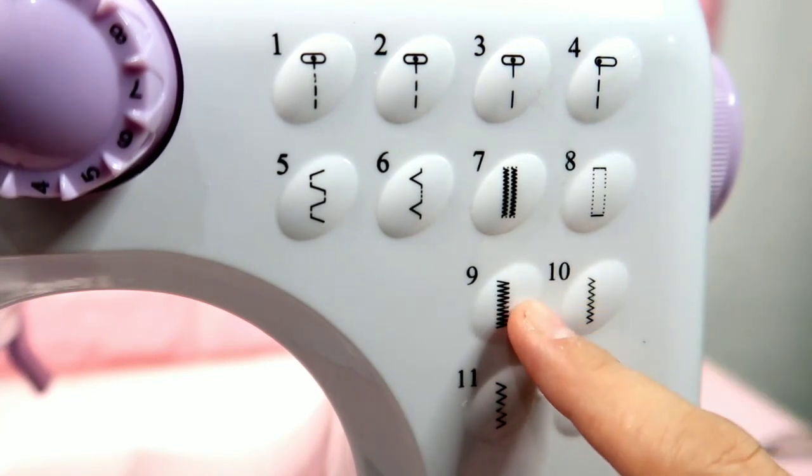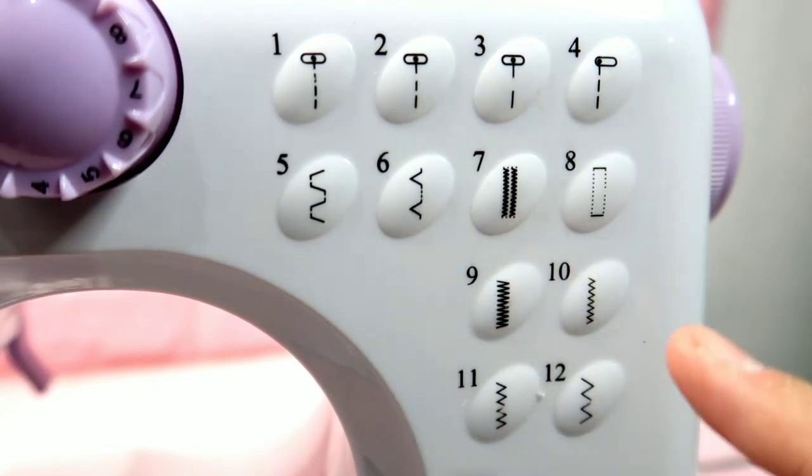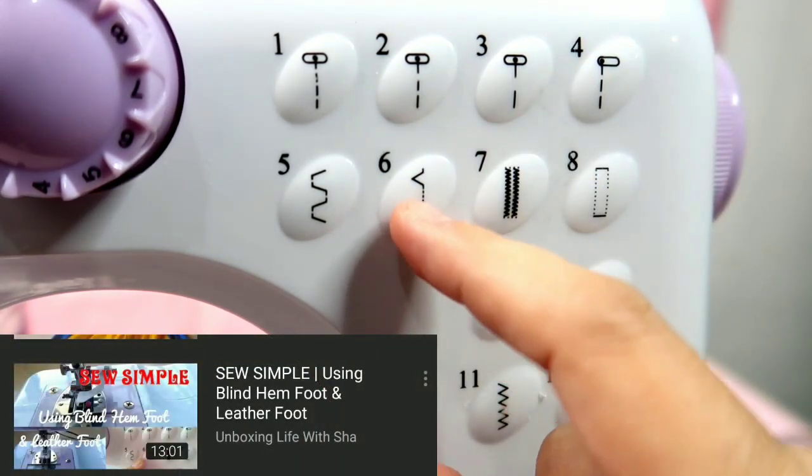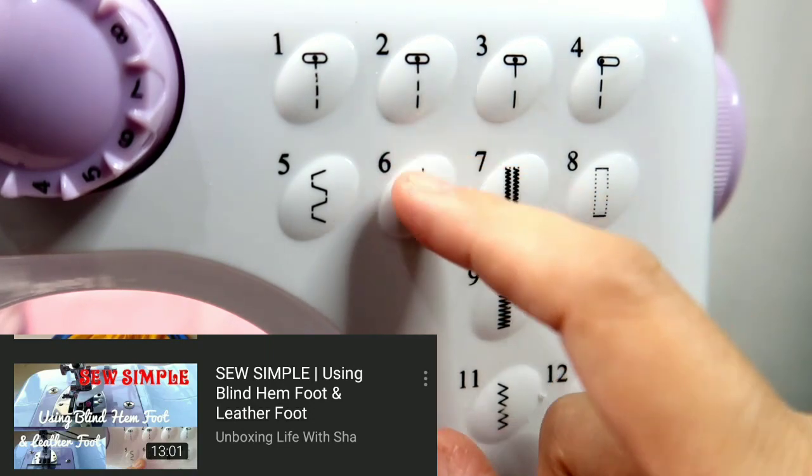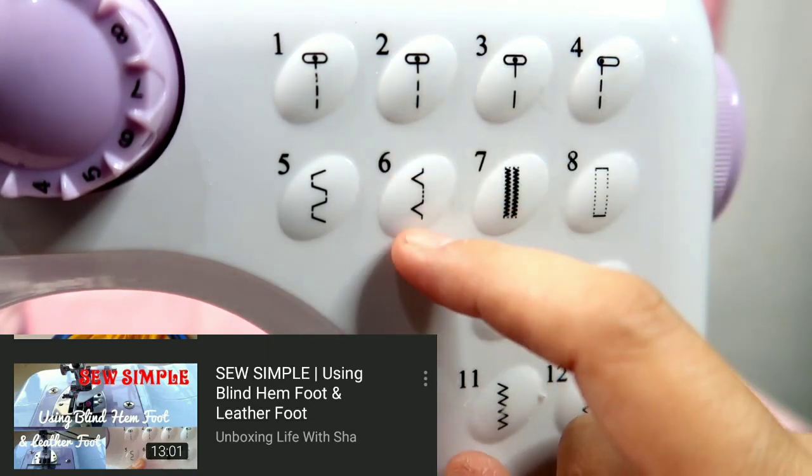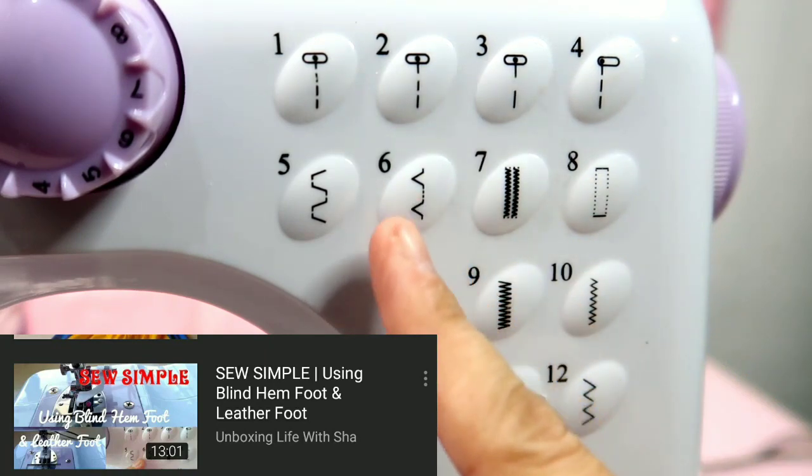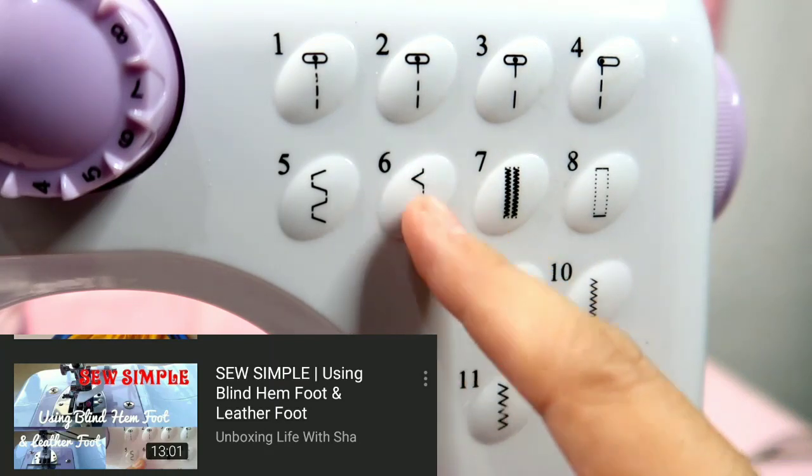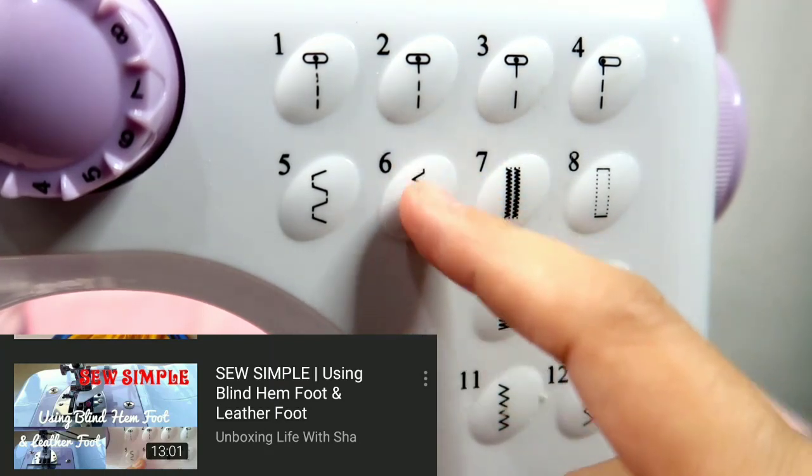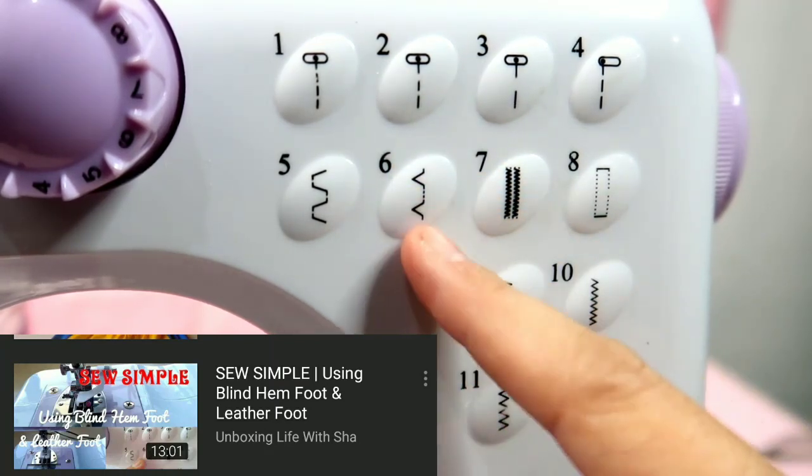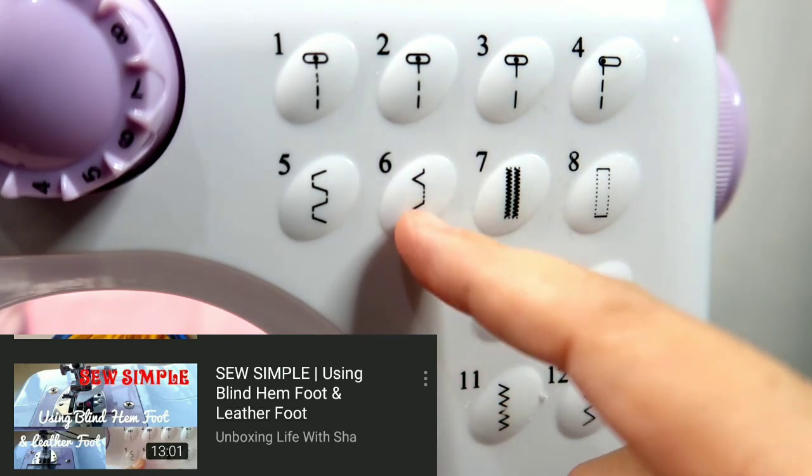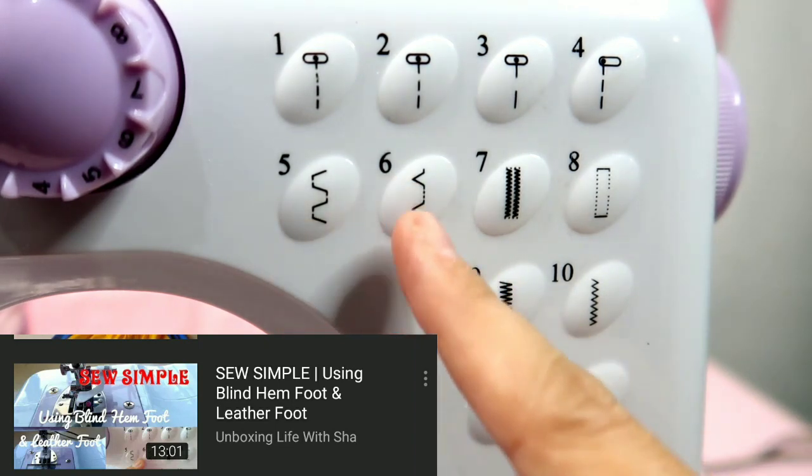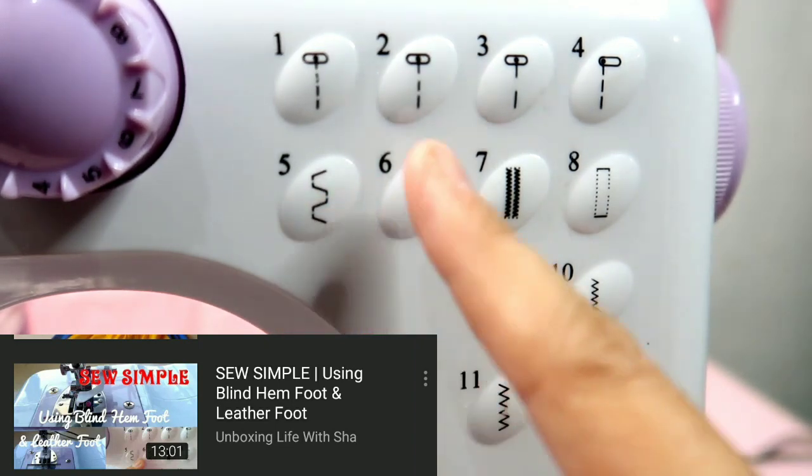It also has buttonhole function, so I tried it but you need to practice more when using 7 and 8. It's in the manual how to use them. I tried it. It looks complicated at first, but when you practice it's easy. This one is used for overcast, I think. I have a tutorial showing how to use it. Maybe I'll just add the link below. For skirts especially when you don't want the seam to show, you use this.